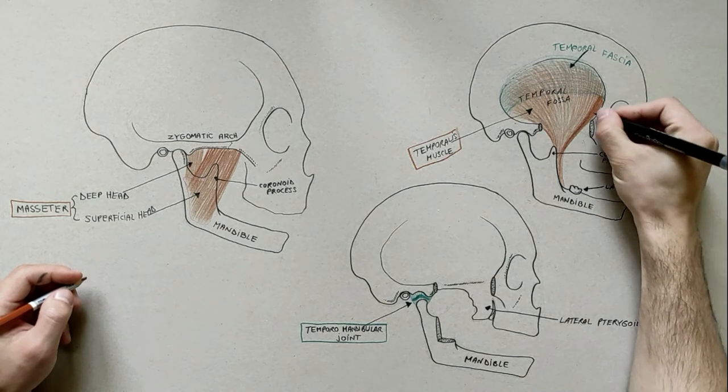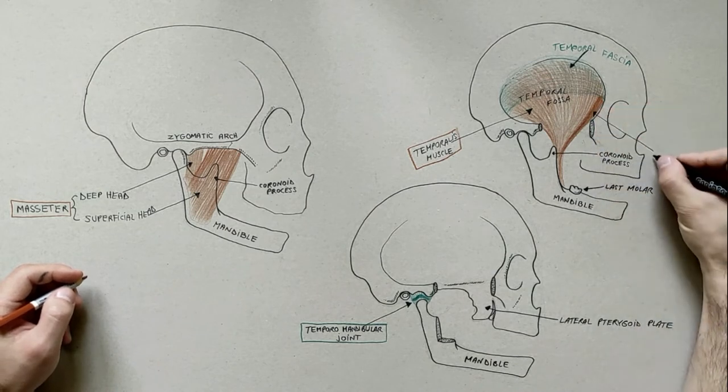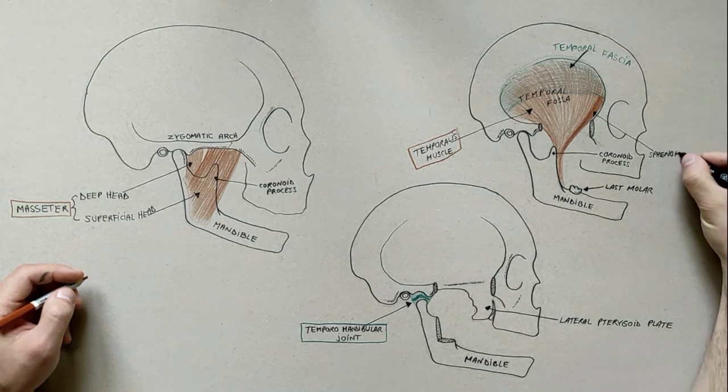Some authors are considering the most anterior set of fibers of the temporalis as a distinct muscle, called the sphenomandibular muscle.